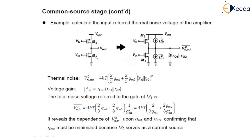Here we have used two transistors M1 and M2. Representing the thermal noise of M1 and M2 by a current source, noting that they are uncorrelated, we can write this as I_M1 squared and I_M2 squared. The resistance will be R0.1 in parallel with R0.2.